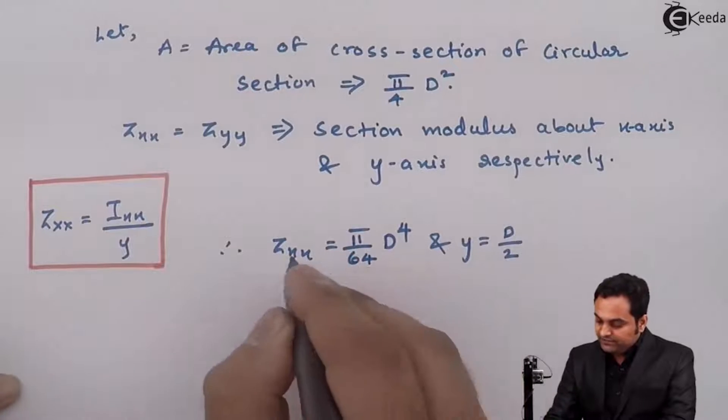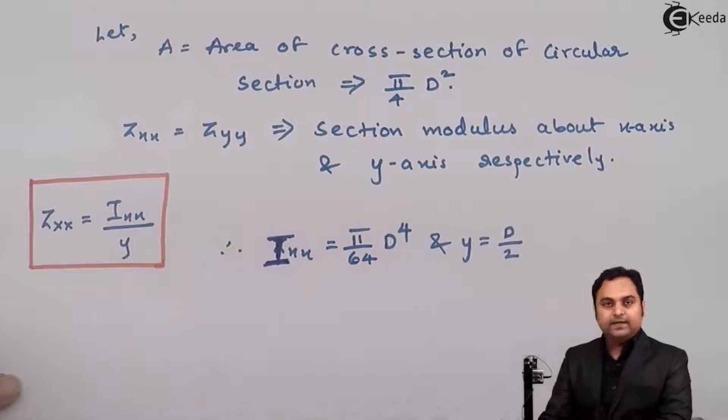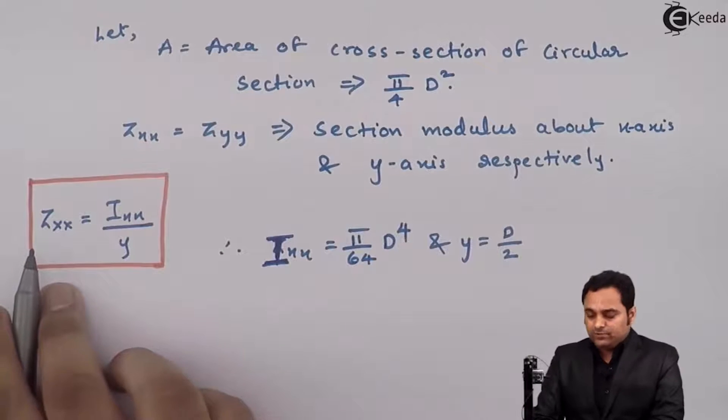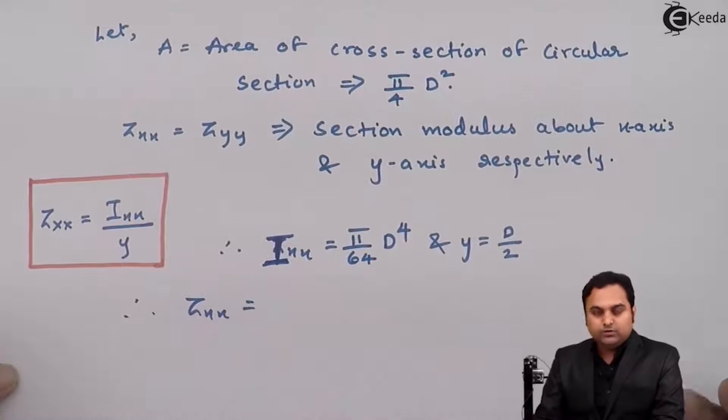I is the moment of inertia and ZXX is the section modulus. Putting the values here, ZXX will equal this.